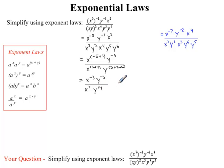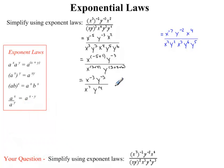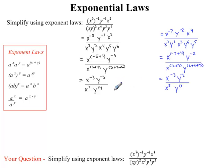Adding the exponents together in the numerator: x to the exponent negative 5 plus 2 is negative 3, times y to the exponent negative 3. In our denominator, we have x to the exponent 7 and y to the exponent 14. I would now like you to try doing this step with the question you are given. Your question should simplify to this. Now the last step is to simplify our numerator with our denominator. Since we're dividing, we can use our last exponent law: when dividing powers of the same base, you subtract the exponents.